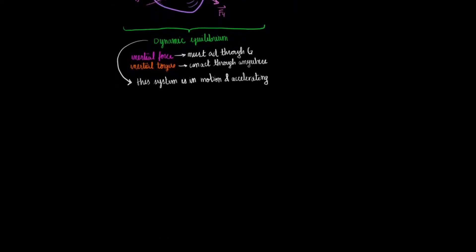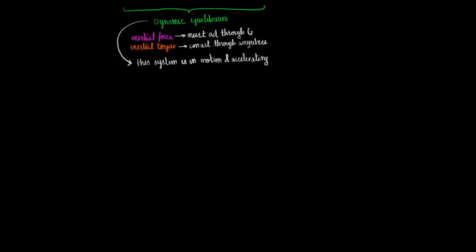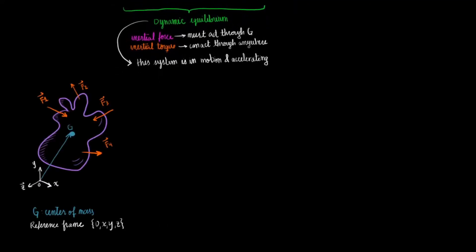With that in mind, let's have that same system drawn again with the center of mass and the external forces in a reference frame 0xyz. To get the body's equation of motion, we can add up all the external forces and set that equal to the mass m times the acceleration a.